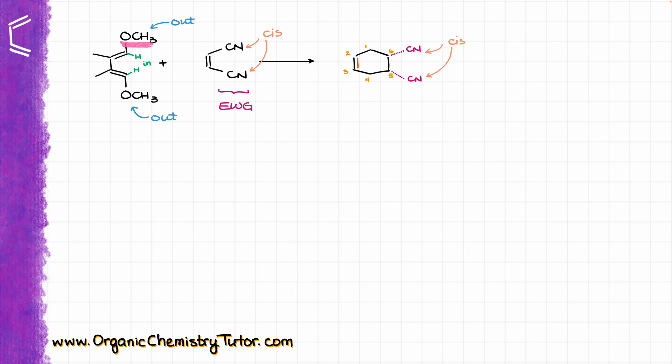I know that my out-groups must be cis to my electron-withdrawing groups. I know that the out-groups here are these methoxy groups. So these OCH3s that are going to be sitting on carbon number 1 and carbon number 4, these guys got to be on the dashes as well. When I put them on my molecule, I will do it just so. I can also indicate my hydrogens here on the wedges, but if you want to leave those as implicit hydrogens that's perfectly fine. You don't have to show them for as long as they're just hydrogens and not other groups.